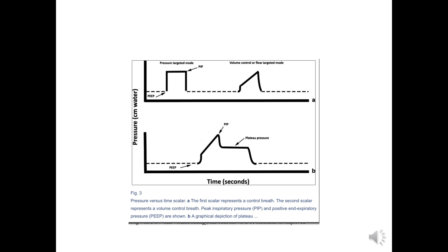Here you can see the pressure-time scalar. The first graph is that of a pressure control ventilation with a square-shaped pressure-time scalar, and the second is the volume control breath. In the lower graph, PEEP is the baseline pressure and the maximum pressure is the peak inspiratory pressure. An inspiratory hold at the end of inspiration is depicted, showing the plateau pressure.